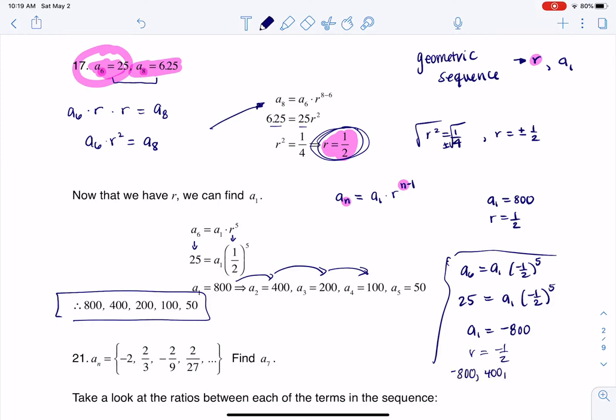Which would have been fine. Keep in mind, if a sub 1 is negative 800, and r is negative 1/2, then my sequence would have started at negative 100, then it would have gone to positive 400, then negative 200, then positive 100, and then negative 50. So it would have had the same absolute value, but I would have had an alternating sequence. I went negative, then positive, then negative, then positive, then negative, where over here, it was just positive, positive, positive, positive, positive. All right, thanks so much, everyone, bye.